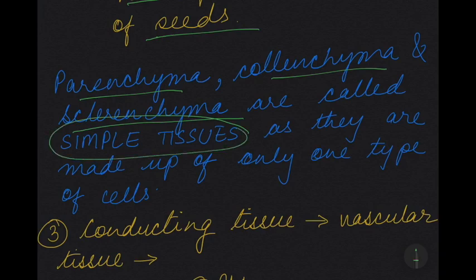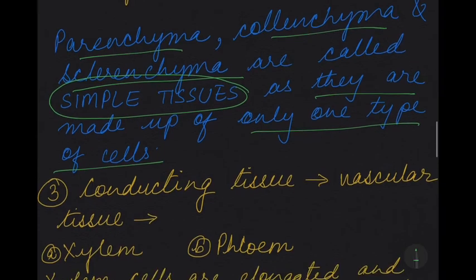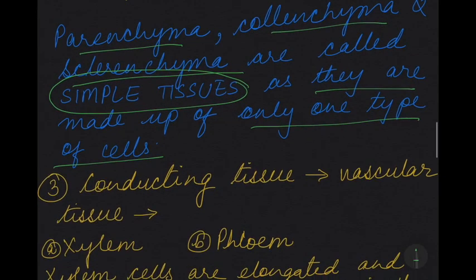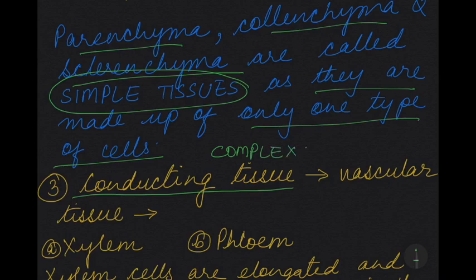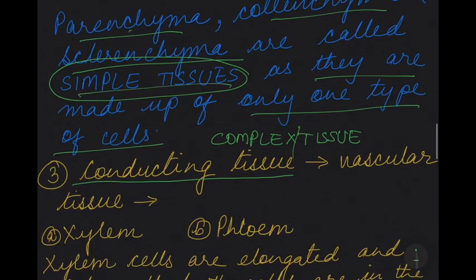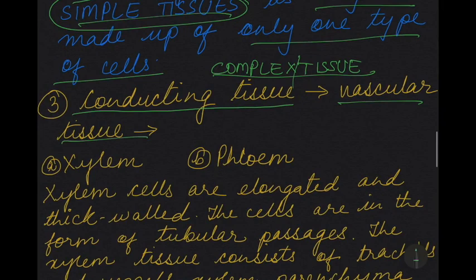Parenchyma, collenchyma and sclerenchyma are called simple tissues because they are made up of only one type of cell. Now moving on to conducting cells — these are complex tissues, called complex because they are made up of different types of cells. Conducting tissues are also known as vascular tissue. There are two types: xylem, which carries water from the roots to the leaves, and phloem, which carries manufactured food from the leaves to different parts of the plant.